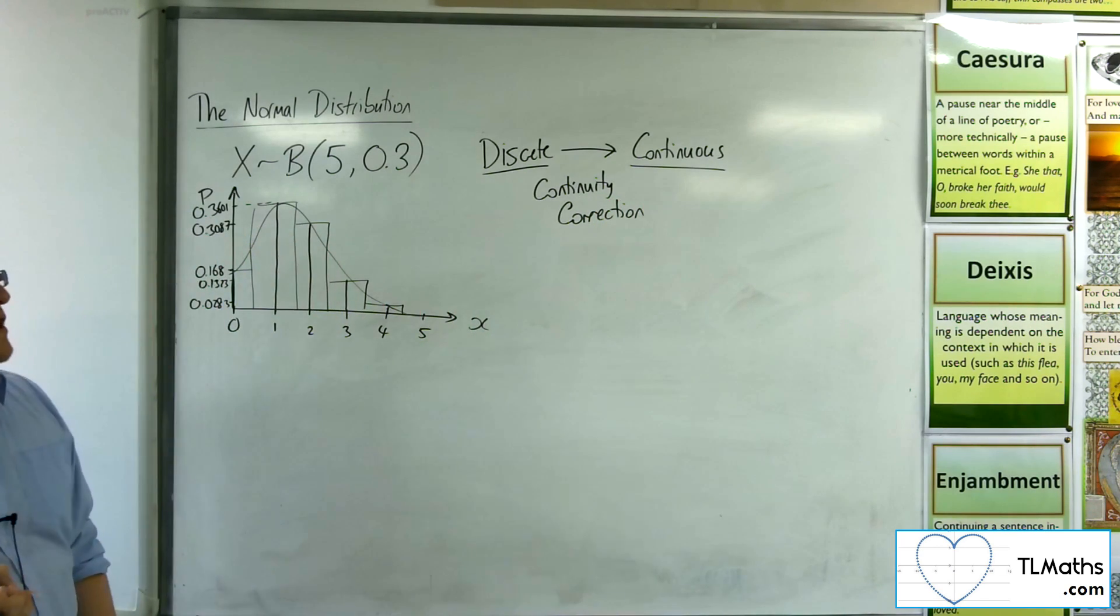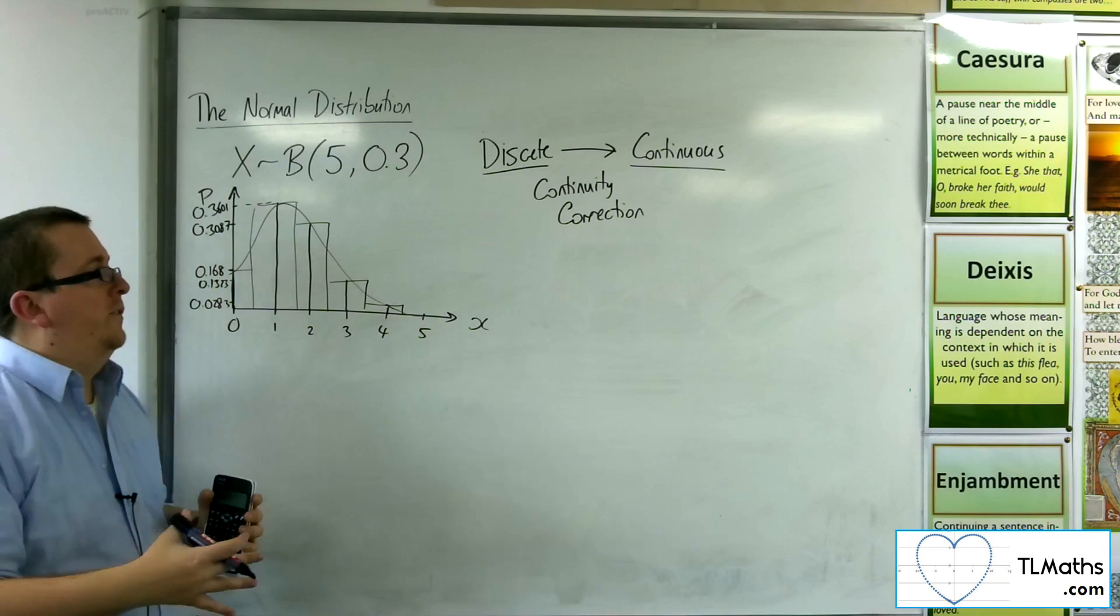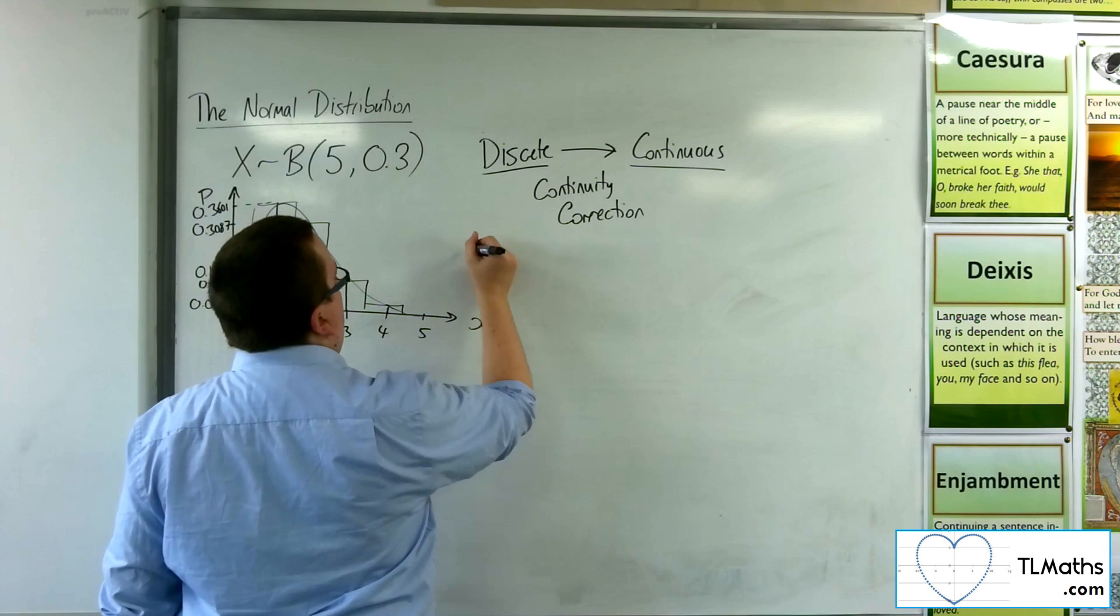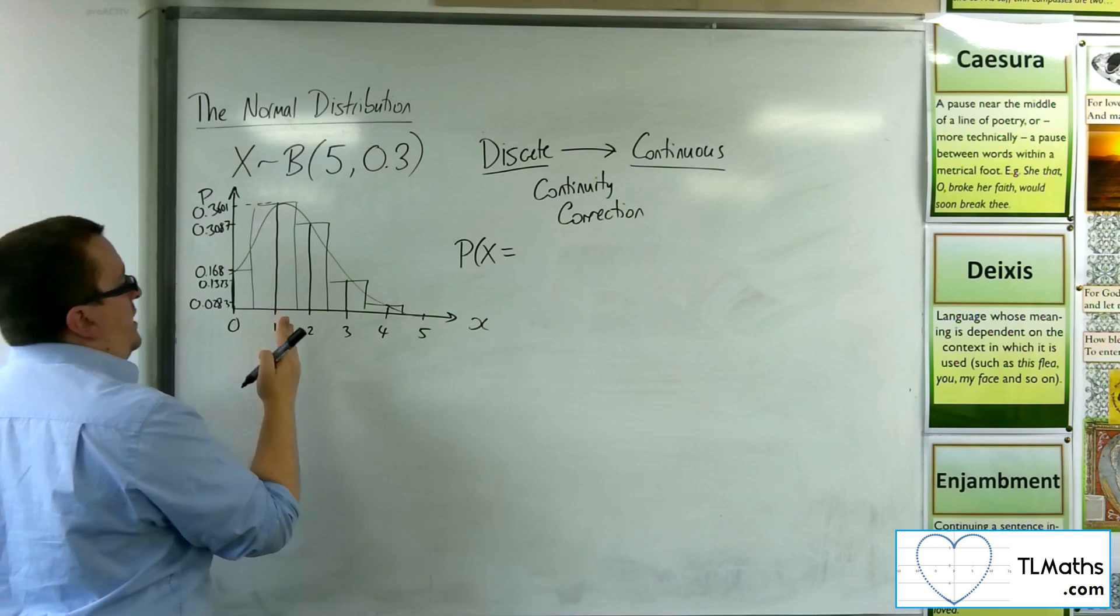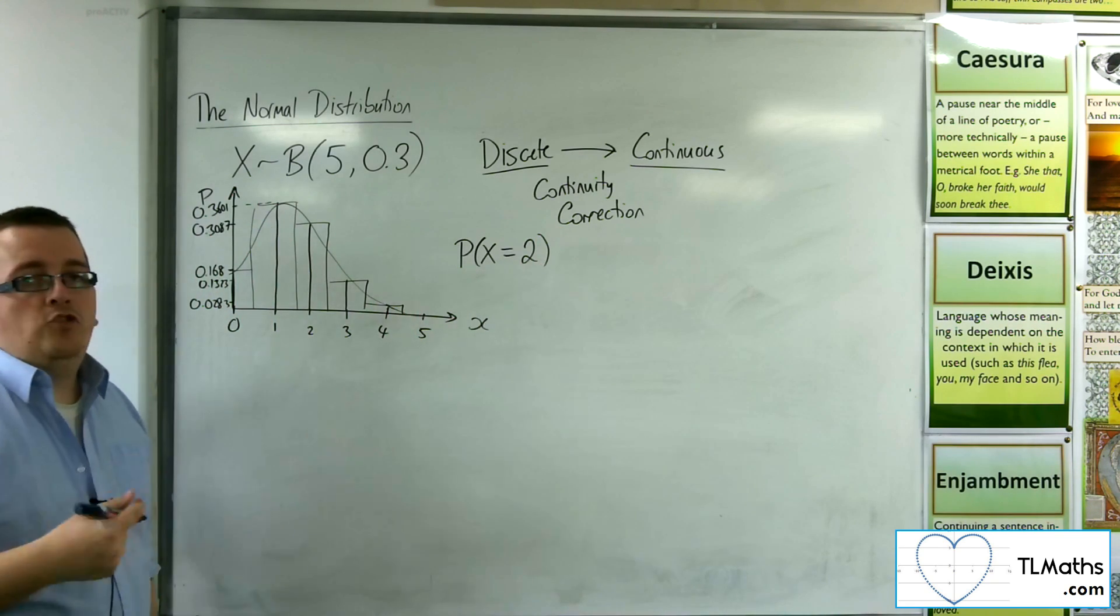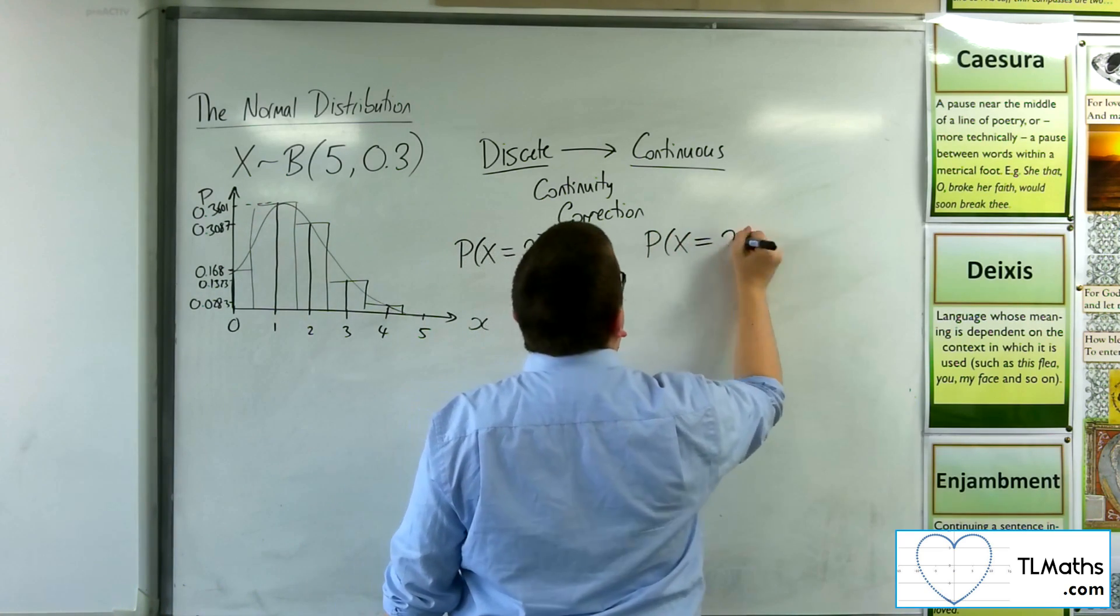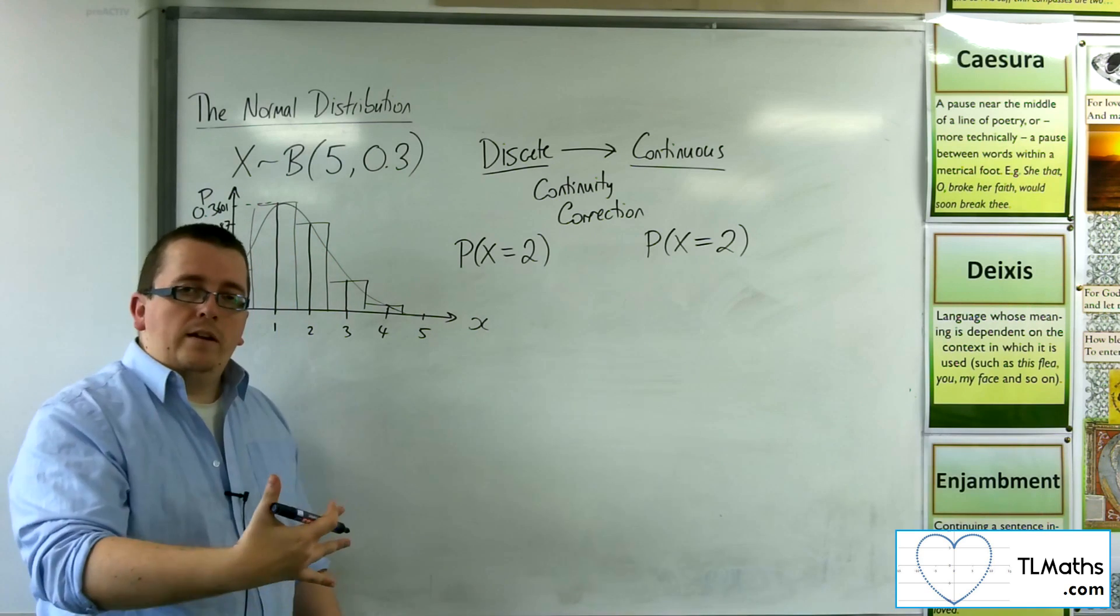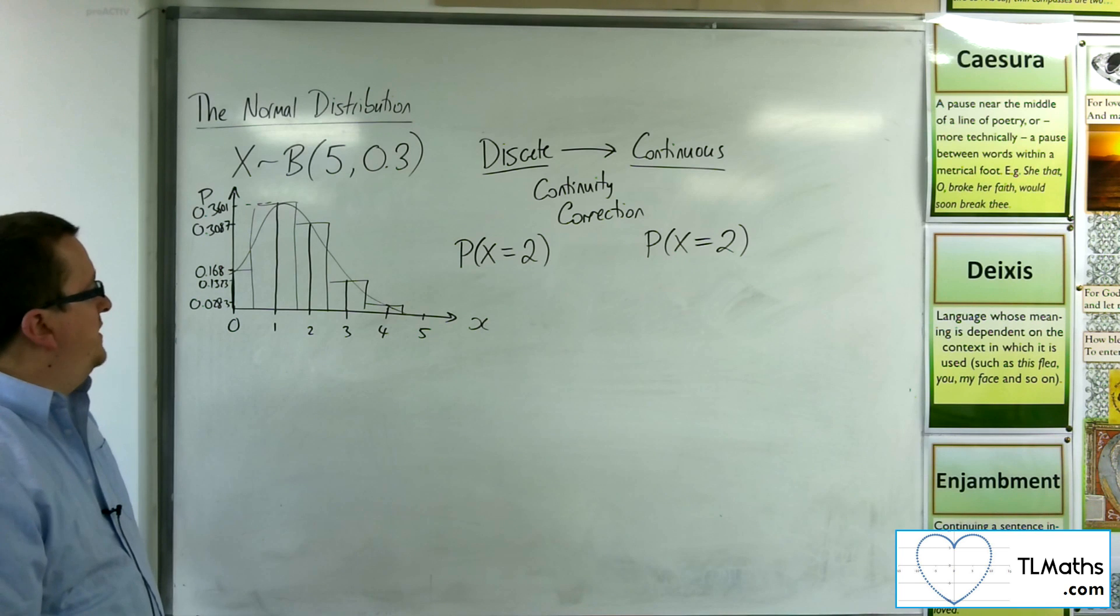Now, the continuity correction is very important as part of this, where if you're thinking about finding, in discrete terms, the probability that x is equal to, let's say, 2, then if I transfer that directly to a continuous distribution, we know that the probability of x being 2 is just 0, because it's the area of a line in continuous form.